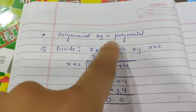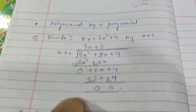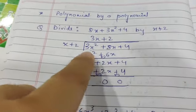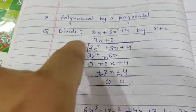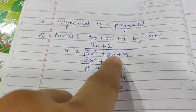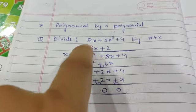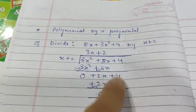Next is polynomial by a polynomial. To divide two polynomials, we must use division method. x plus 2 divides 8x plus 3x squared plus 4. We need descending order here by degree. Highest power is 2, then single power and constant term.